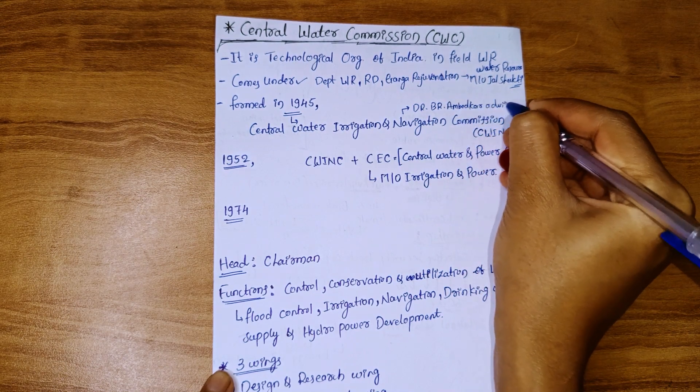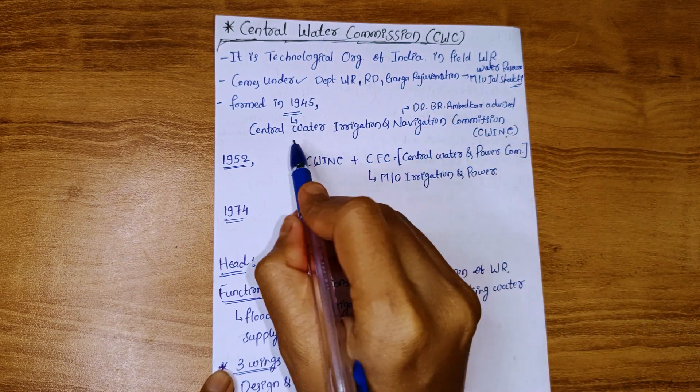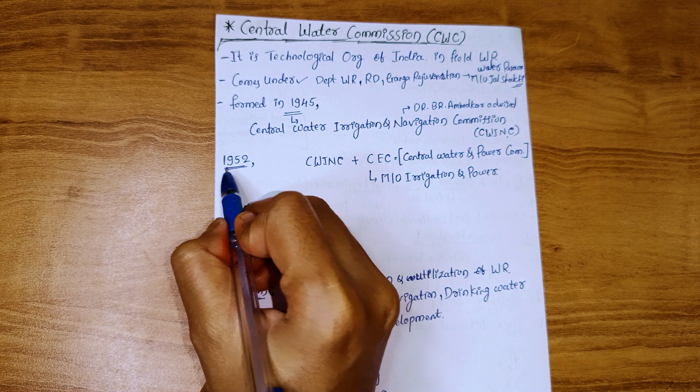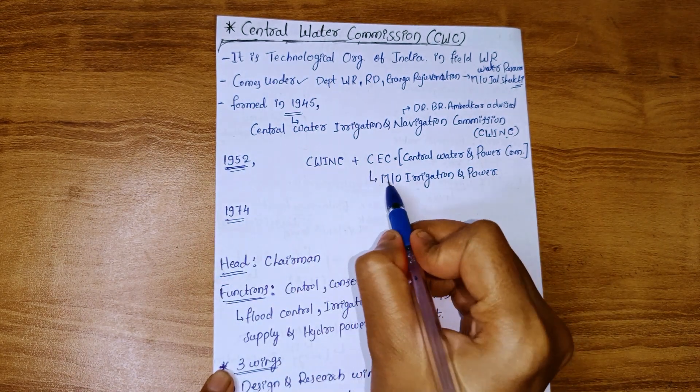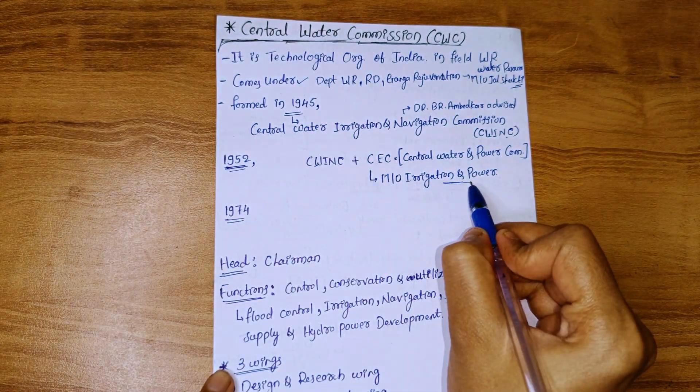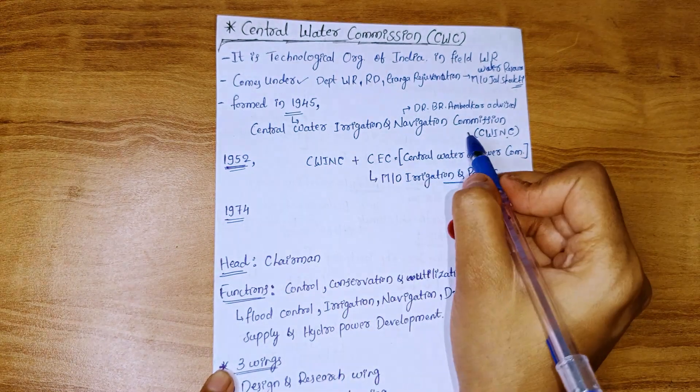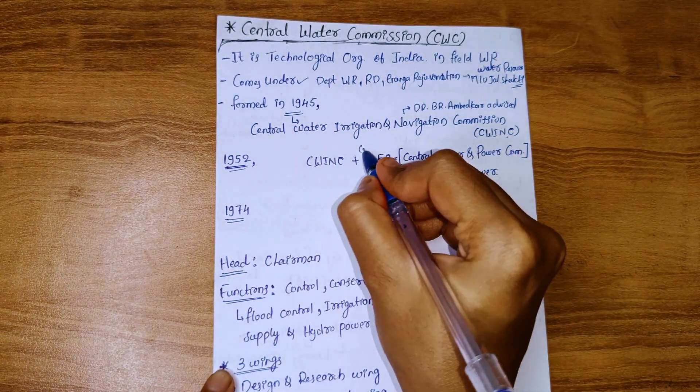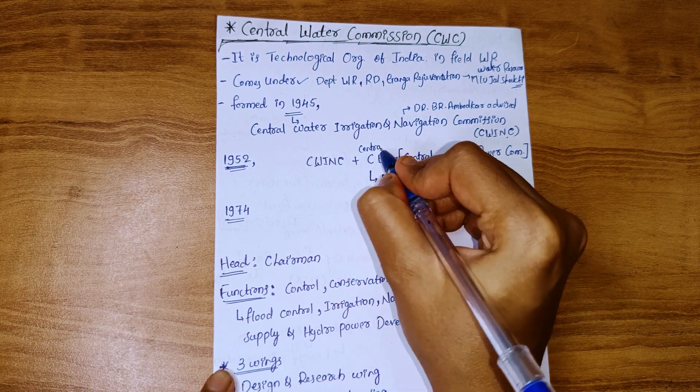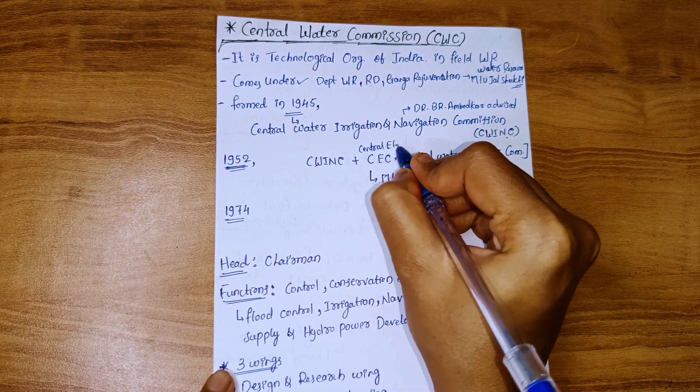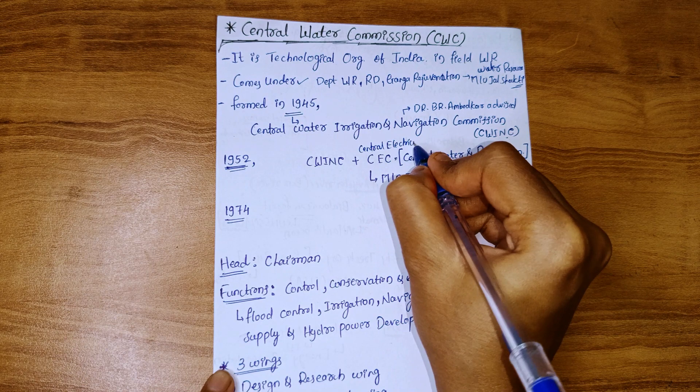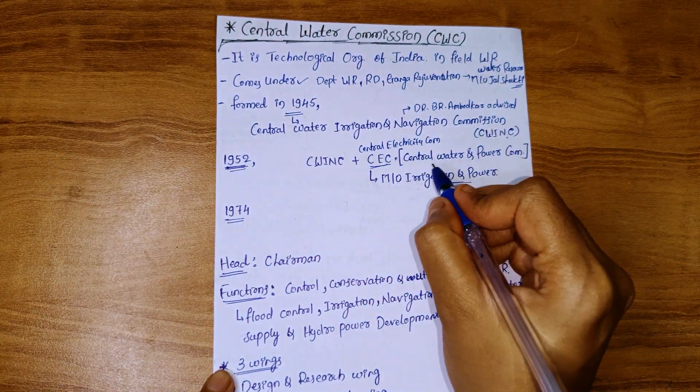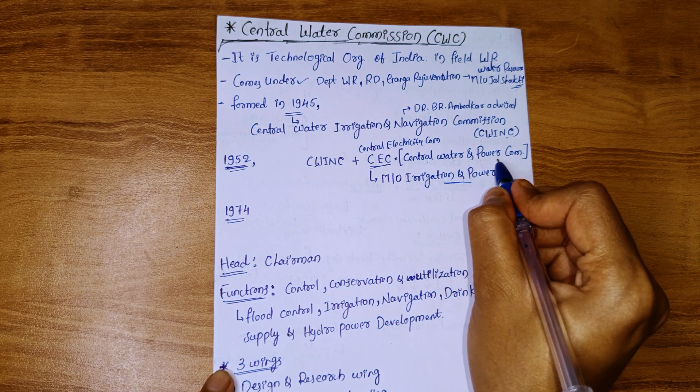In 1952, the government established a Ministry of Irrigation and Power. They decided to merge the Central Water Irrigation and Navigation Commission and the Central Electricity Commission to form the Central Water and Power Commission.